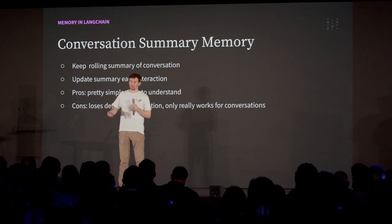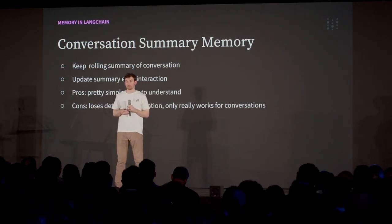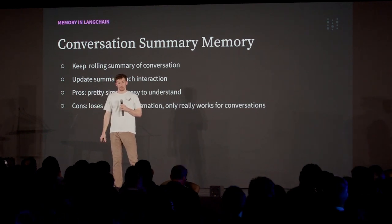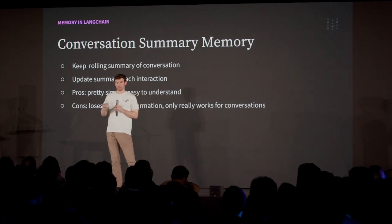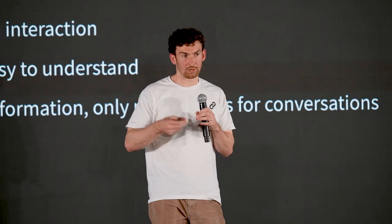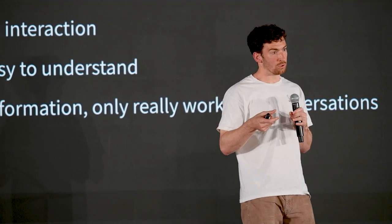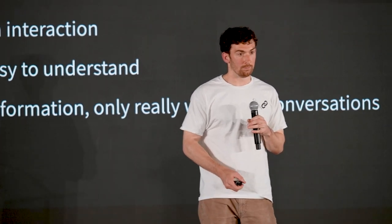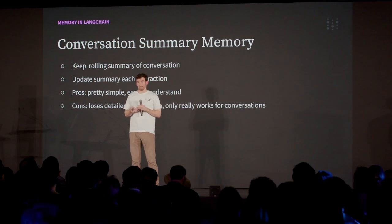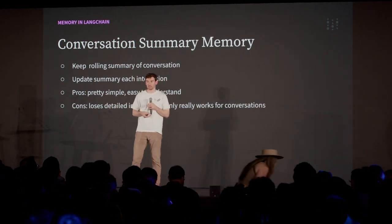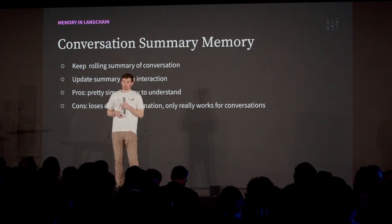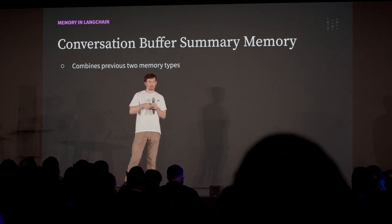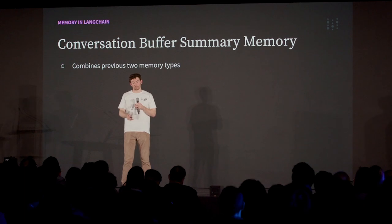The next version of memory we have is conversation summary memory. This keeps a rolling summary of the conversation — every interaction it updates the summary and passes that back in. The pros are it's simple, easy to understand, and reasonably configurable. You could run it every two, three, or five chat messages. The cons are it loses some detailed information — you have a summary but not the exact specifics. A combination of both is also really efficient: you get the specificity of recent messages and a summary of the longer conversational context. We support that as well.